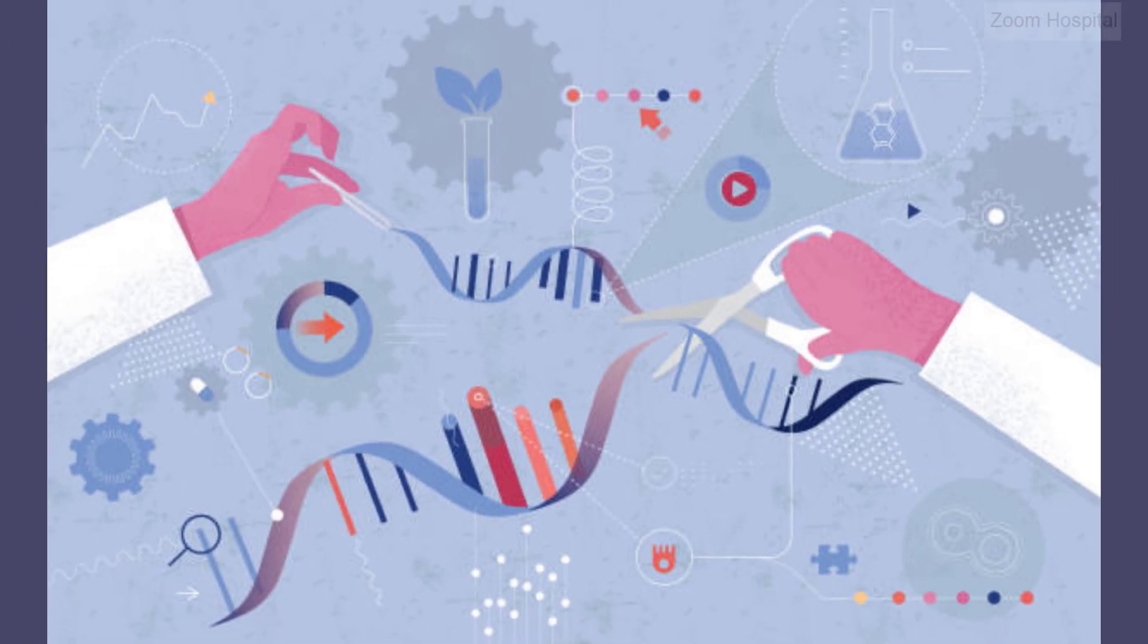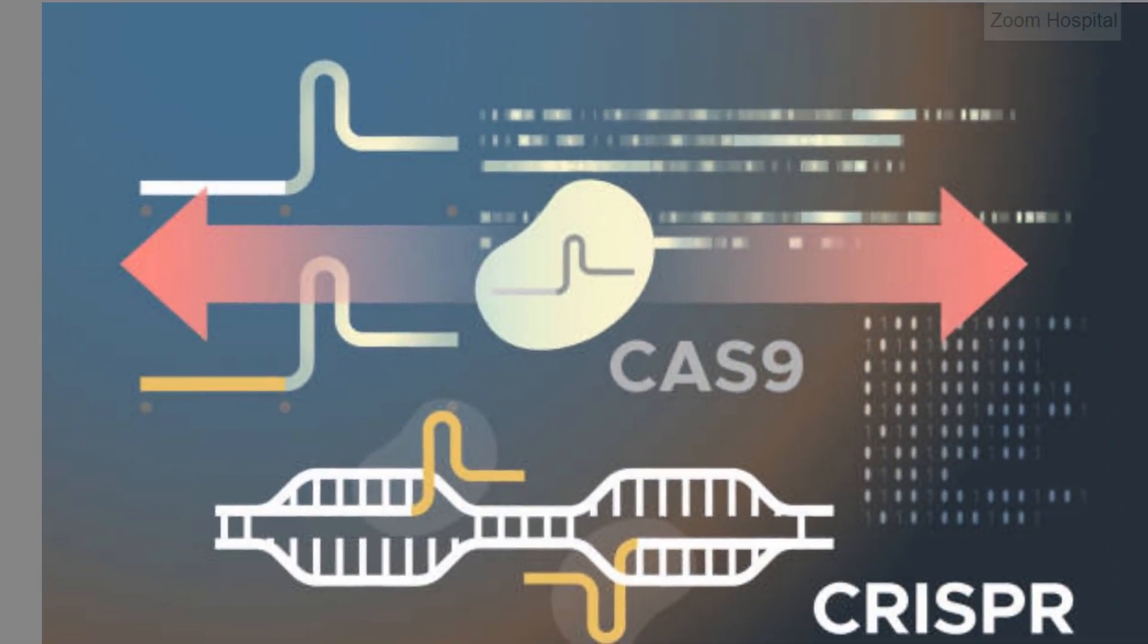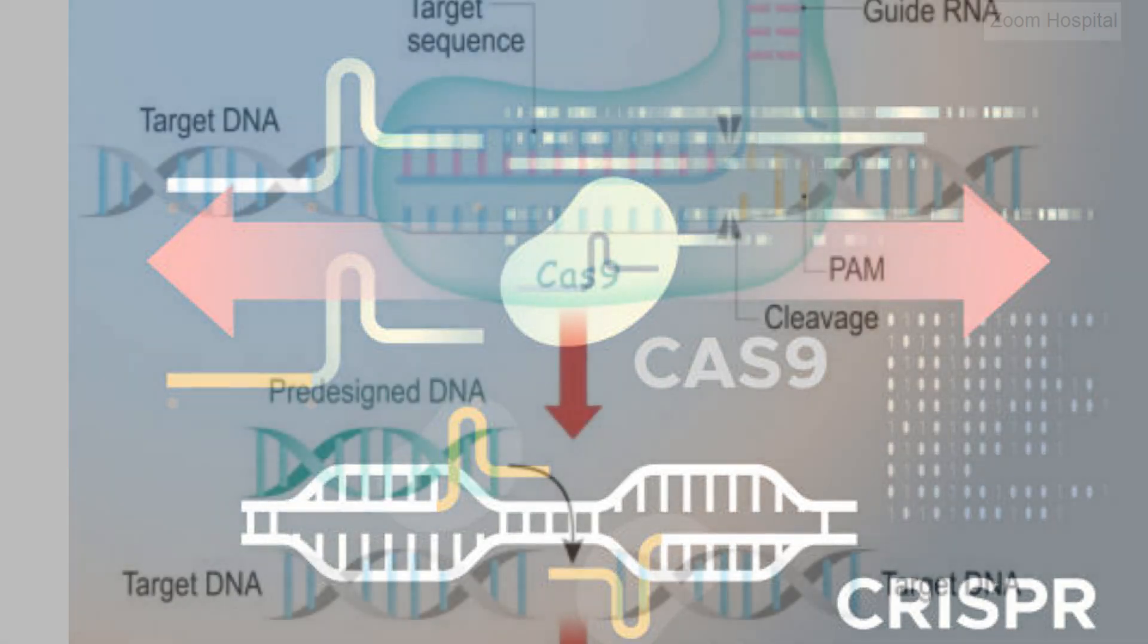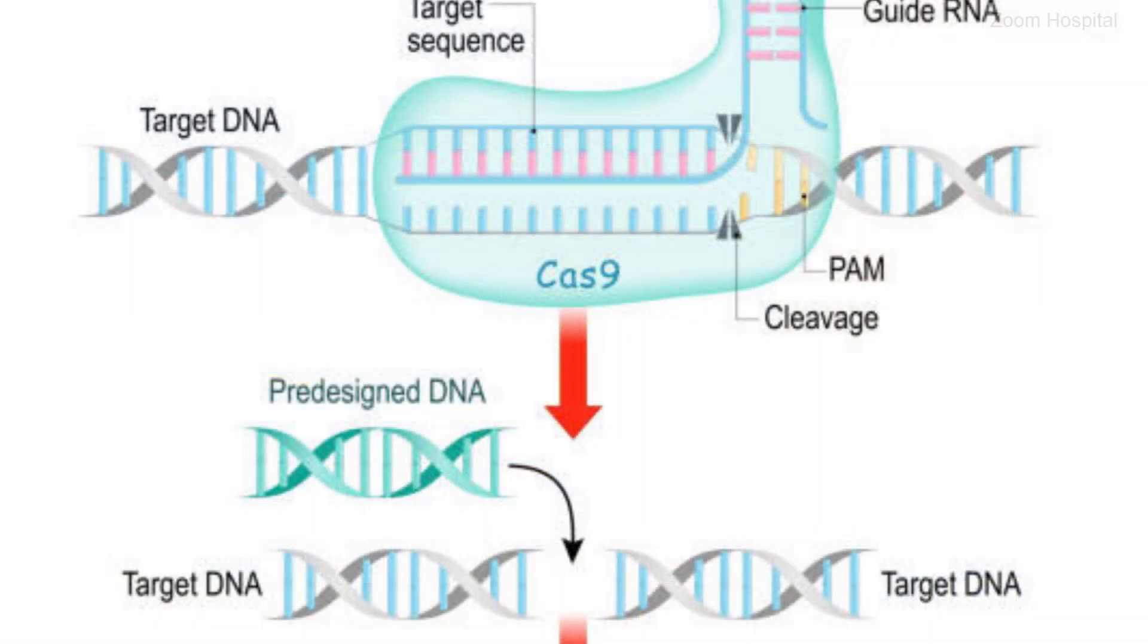Cas9, on the other hand, means CRISPR-associated protein 9, which is an enzyme that acts like a pair of molecular scissors capable of cutting strands of DNA at specific locations.